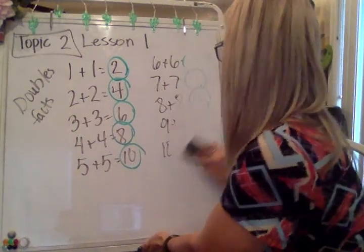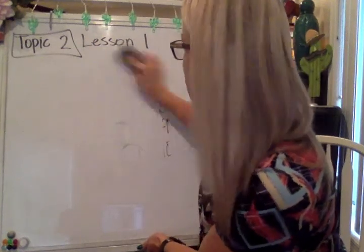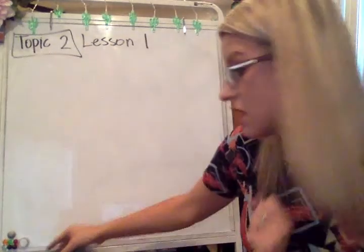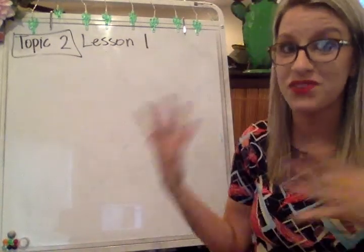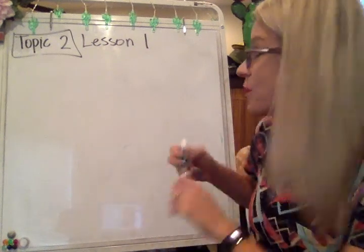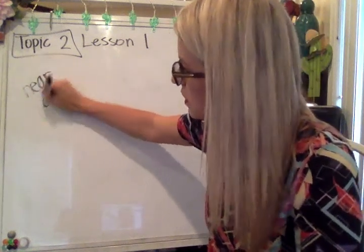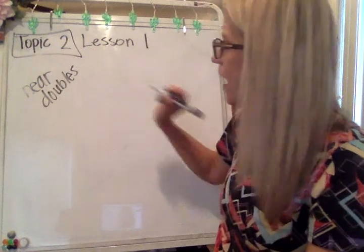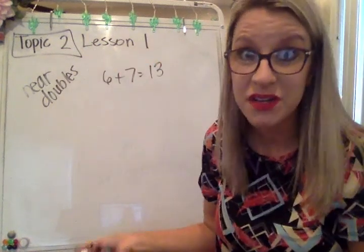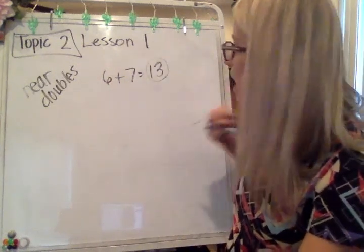Just to kind of remind you, before we talk about if something is even or odd — for odd numbers, what I want you to remember are some near doubles facts. For example, six plus seven has a sum of thirteen. That was a near double. Near doubles also have a sum that is going to be odd.